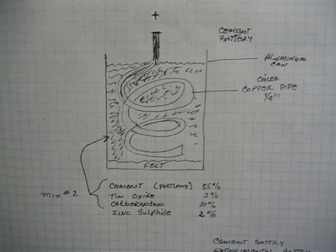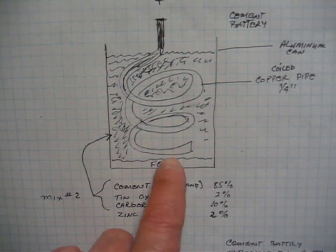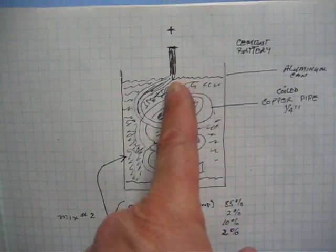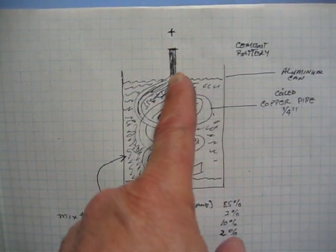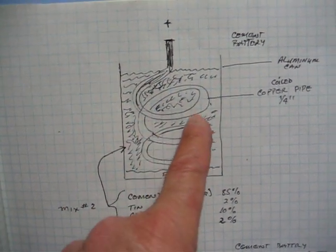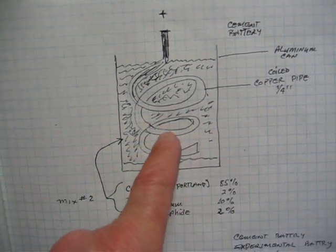I want you to get a good look at it. The important thing about this is the surface area in the cement battery. Chuck and I took this quarter-inch copper tubing and we coiled it like this inside the battery so we could get a lot of copper inside here.